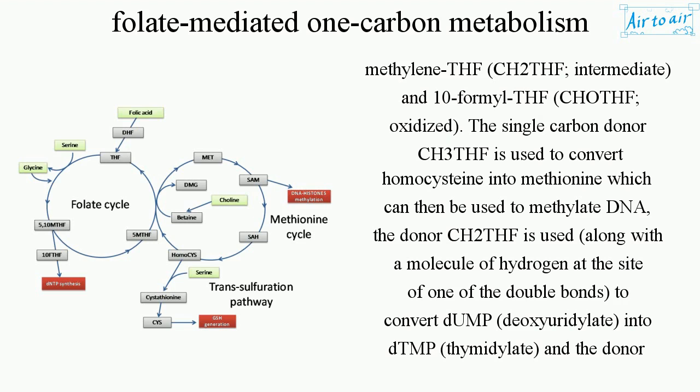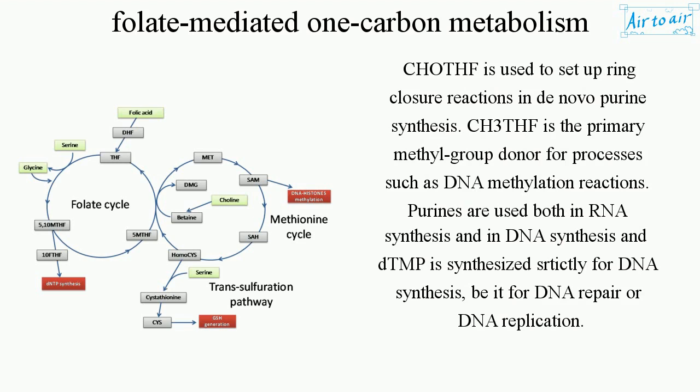The donor CH2-THF is used along with a molecule of hydrogen to convert dUMP (deoxyuridylate) into dTMP (thymidylate). The donor CH2-THF is also used to set up ring-closure reactions in de novo purine synthesis.